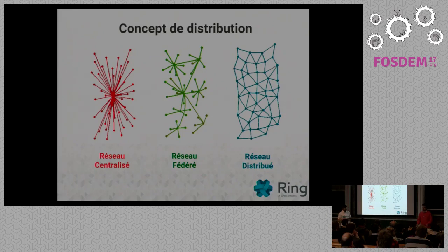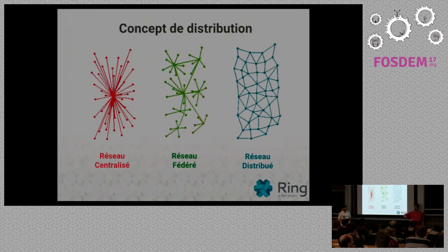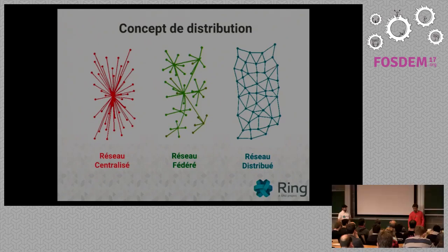The federated system is what we use with emails. With emails we have different servers that can communicate with each other, and every user is registered on a given server. You send the email to the server, the server communicates with other servers, and then the other server delivers the email to the end user. Ring is fully distributed — there is no federation concept. It's really fully peer-to-peer.